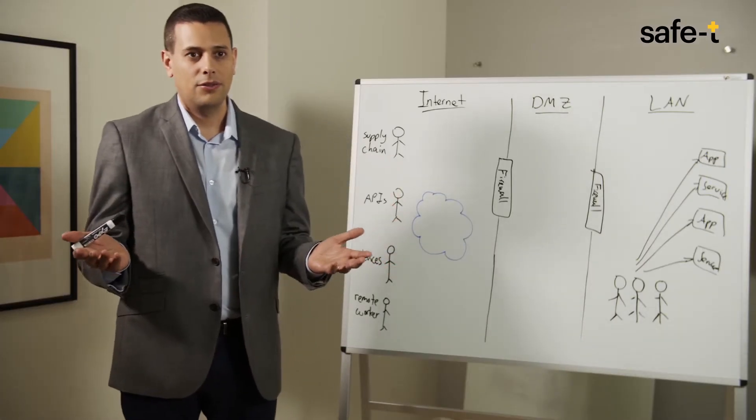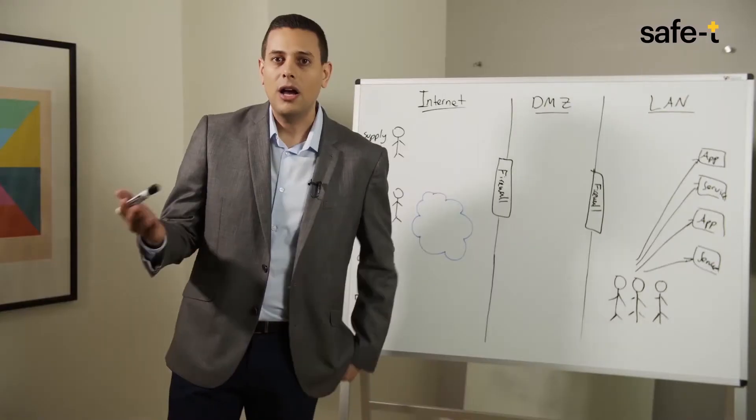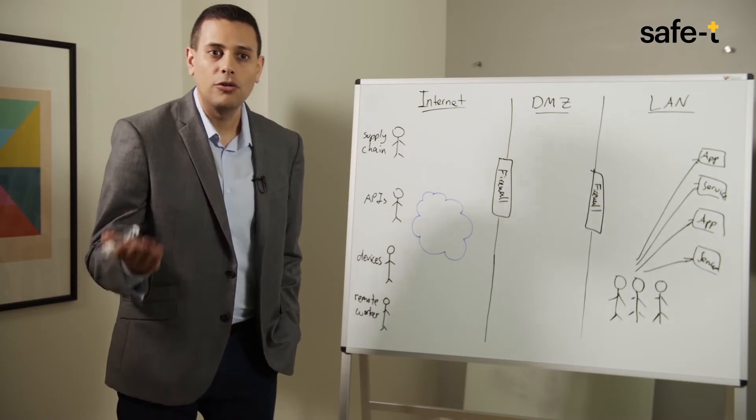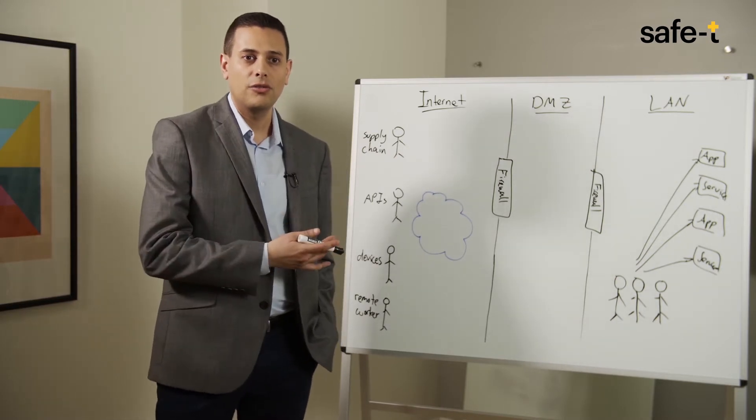Today, however, things are more complex. For one thing, organizational networks are dispersed across multiple geographic locations, data centers, and cloud infrastructure, so we have multiple network perimeters. On top of that, employees don't exclusively work from the office anymore, so they need remote access to corporate resources from anywhere.